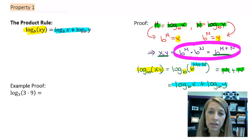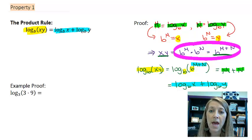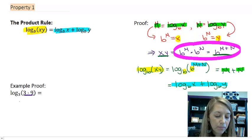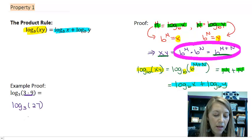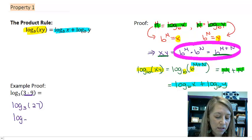So now that we know this property is true, let's actually work it in an example down here. So basically we're going to reprove this property with actual numbers rather than just variables. So let me work this one here, and I'm going to work the inside first. So log base 3 of 3 times 9, I can think of log base 3 of 27.